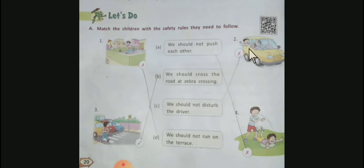Picture number two: The boy is disturbing the driver. This is also unsafe. This is matched with C: We should not disturb the drivers. If the driver is disturbed, then the vehicle may get into an accident.